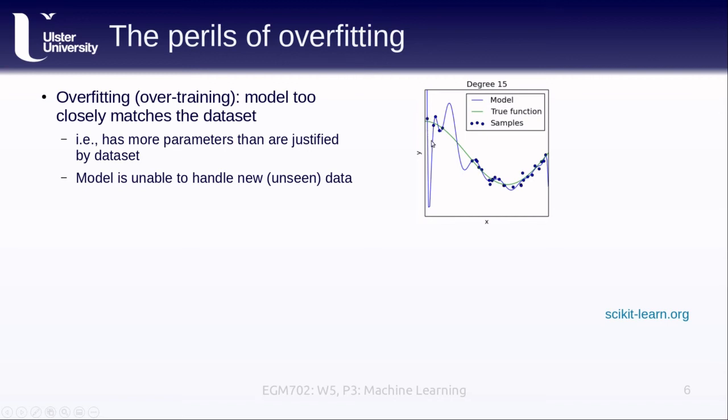The line of our model passes through each of these different points or a number of these different points, but it's going to do a very poor job when we put in new data and look at the results. It's not going to come very close to actually modeling the particular function that we're attempting to work with.